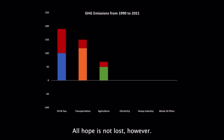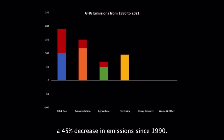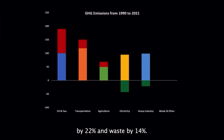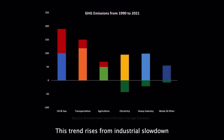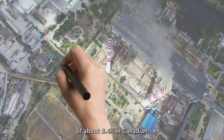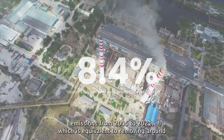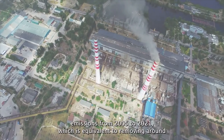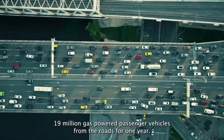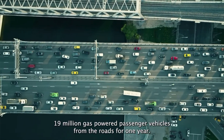All hope is not lost, however. Remarkably, the electricity sector experienced a 45% decrease in emissions since 1990. Similarly, heavy industry emissions have decreased by 22% and waste by 14%. This trend stems from industrial slowdown, and it is significant enough that there is a general decrease of about 8.4% in Canadian emissions from 2005 to 2021, which is equivalent to removing around 19 million gas-powered passenger vehicles from the roads for one year.